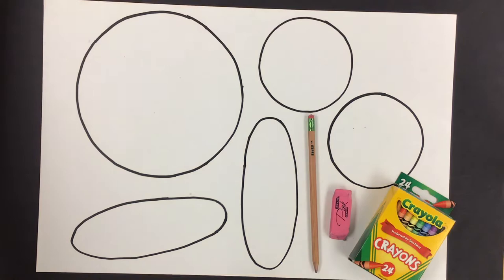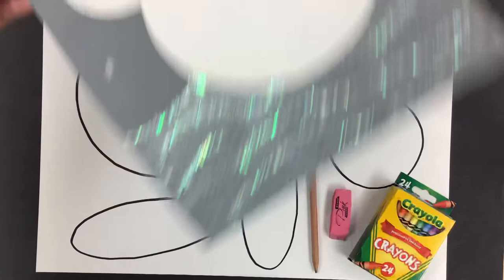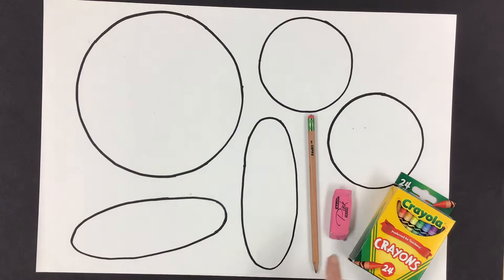So today what we're going to do is we are going to create an Arctic Hare picture. And we are going to make our Arctic Hare parts. So let's get started. You're going to need your pencil, eraser and crayons and a piece of paper that has these shapes on it.